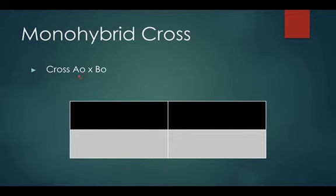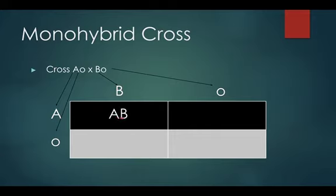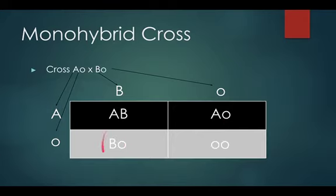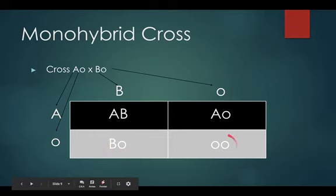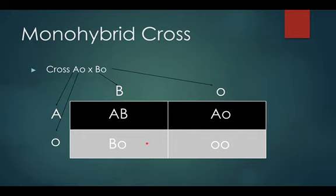One more: let's cross heterozygous A with heterozygous B. You get AB — codominant AB blood type. Then heterozygous A blood type, heterozygous B blood type, and homozygous recessive O. In this Punnett square you have all four blood types — AB, A, B, and O. If the parents were like this, they'd have a 25% chance of any blood type. The other crosses had different and more straightforward probability outcomes.